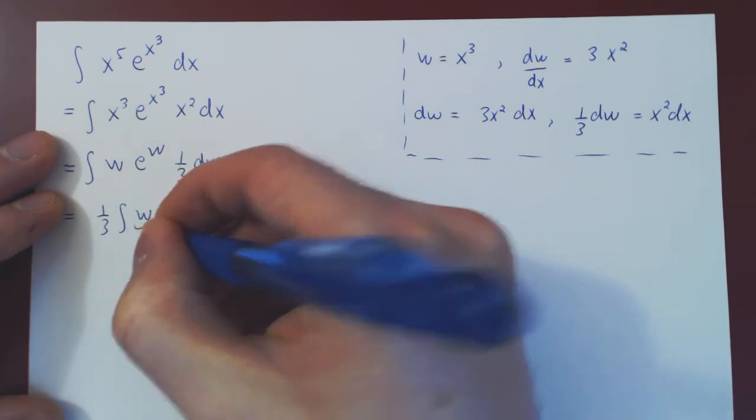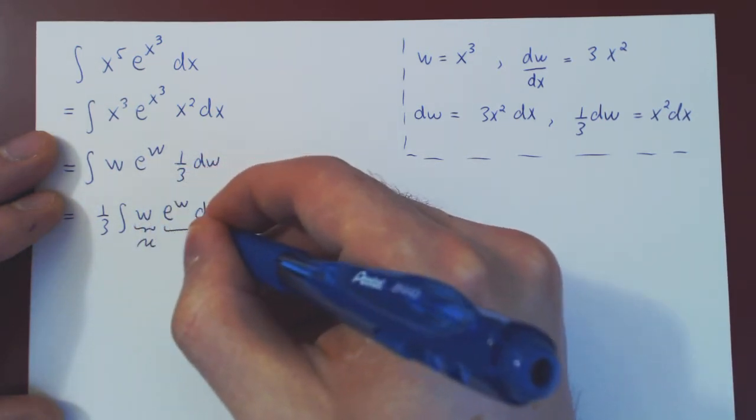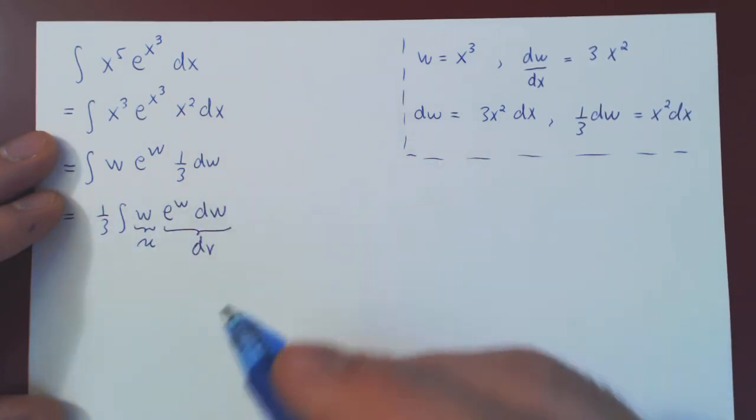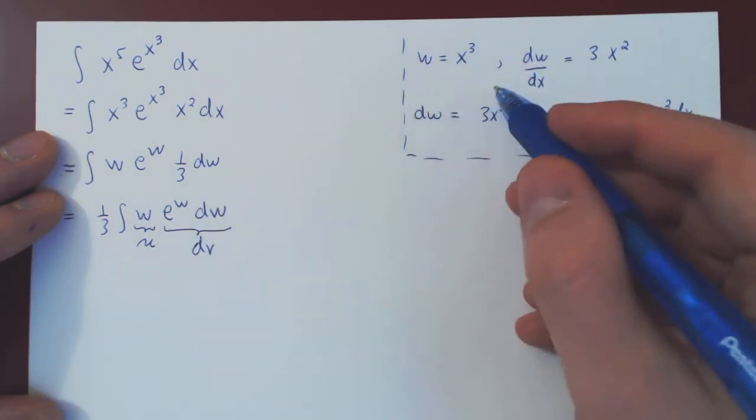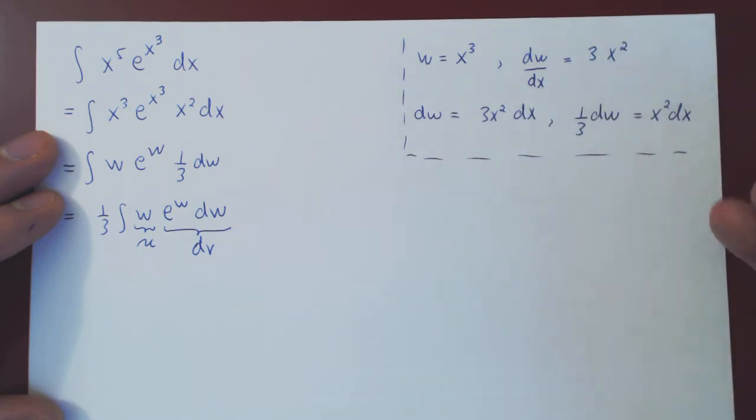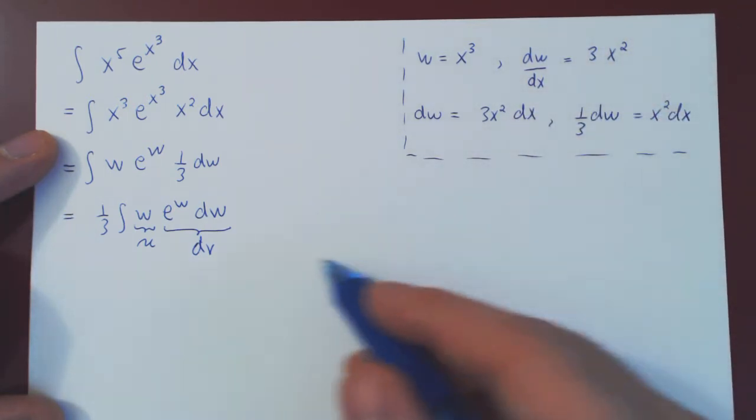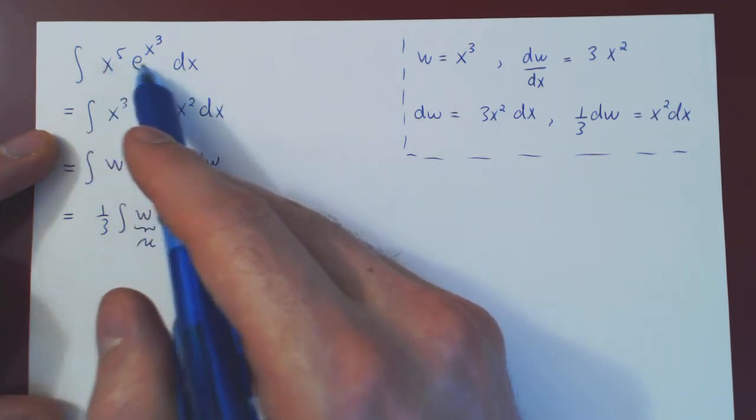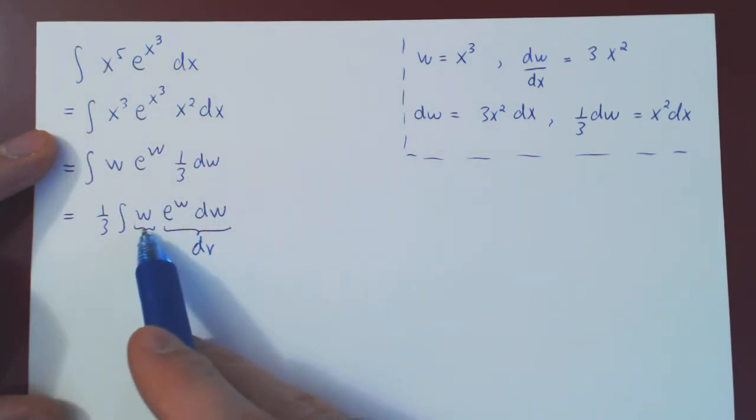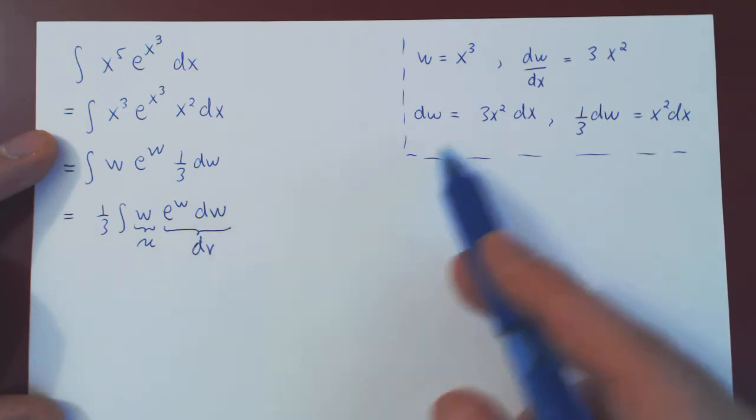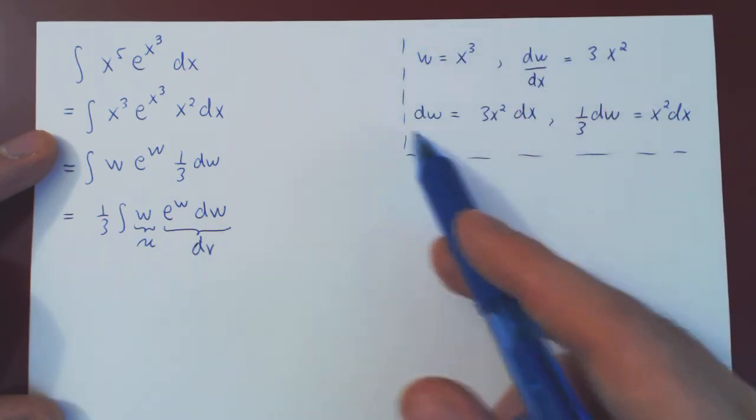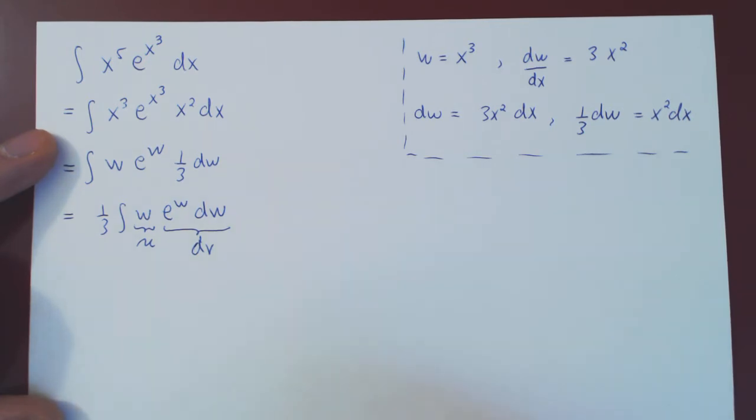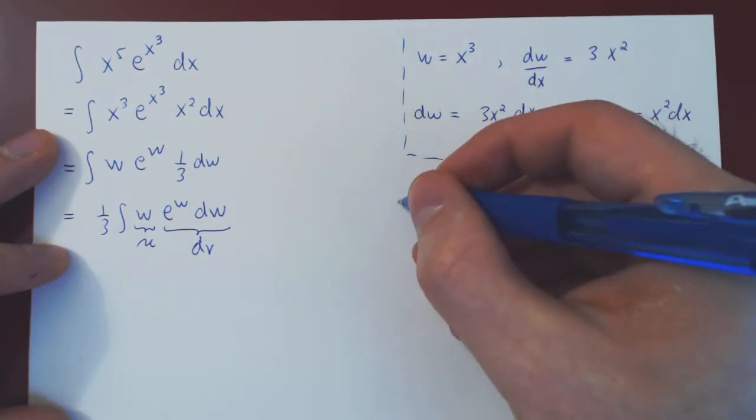So, I'll let u be w. And dv, of course, everything else. And you see why I did not use u when I made my quote-unquote u substitution. If you ever have a gut feeling that after you make a substitution, you'll have to use by parts, do not use u in your u substitution. Because you want to keep u for your by parts. And now, we're good to go.